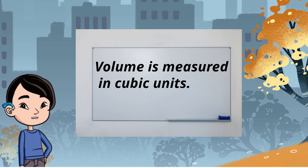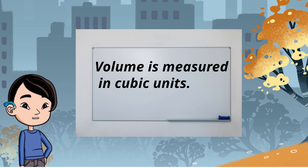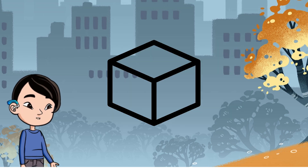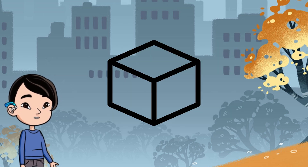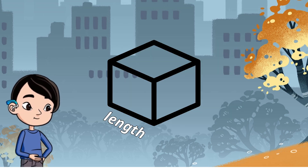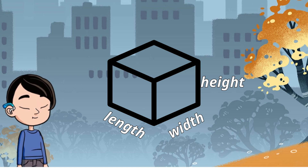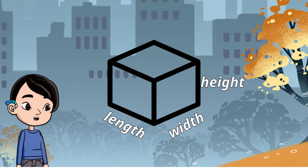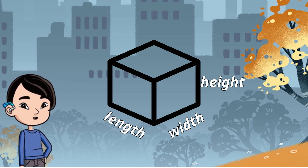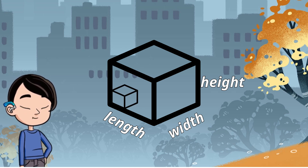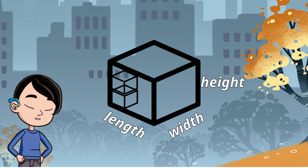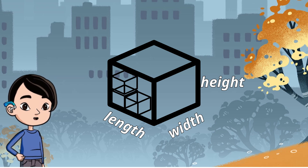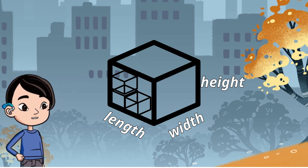Volume is measured in cubic units, because it represents a three-dimensional space. To understand this, think of a cube. It has three dimensions: length, width, and height. The cubic part indicates that we're measuring a three-dimensional space. It's like filling up a cube with tiny cubes, each one representing a unit of volume. The total number of these tiny cubes gives us the volume of a larger cube.